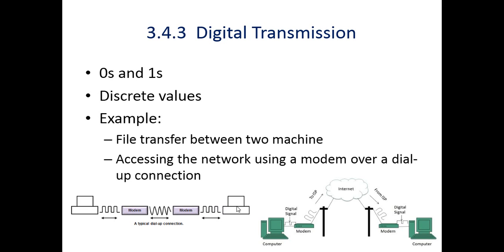This is another example: digital signaling is used and digital data is transferred into analog signal using the modem. It is then transmitted over the internet. At the receiver side, the modem converts the analog signal back into the digital signal and stores the digital data into the client computer.